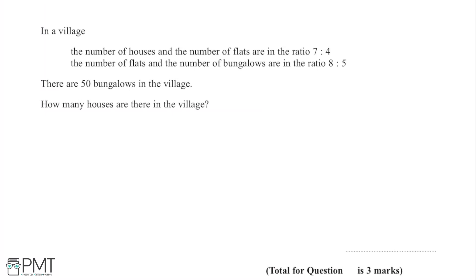In a village, the number of houses and the number of flats are in the ratio 7:4, and the number of flats and the number of bungalows are in the ratio 8:5. There are 50 bungalows in the village and we're asked how many houses there are.